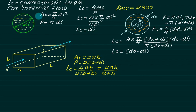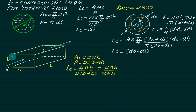To summarize internal flow: the characteristic length is LC equals four times AC upon perimeter. For a circular section this equals di; for an annular section it is do minus di; and for a rectangular cross section it is 2ab divided by (a plus b).